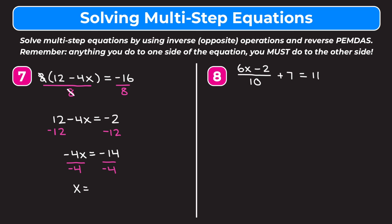On the right we have negative 14 over negative 4. A negative divided by a negative is positive, giving us positive 14 over 4. Simplifying by dividing top and bottom by 2 gives 7 over 2. So x equals 7 halves.